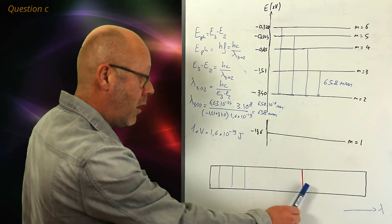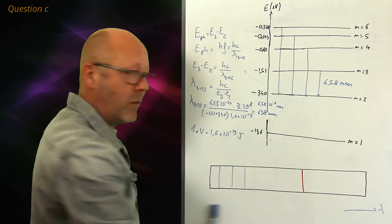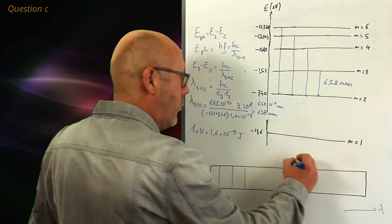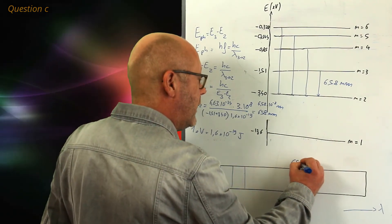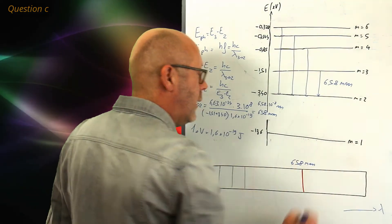So, this transition corresponds to a wavelength of 658 nanometers. Well, the largest wavelength I have on my spectra is the red one. Therefore, I would put 658 nanometers above it.